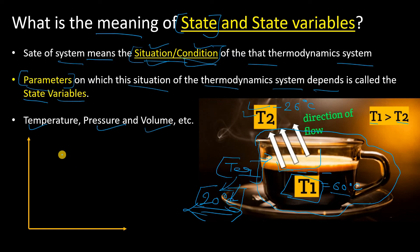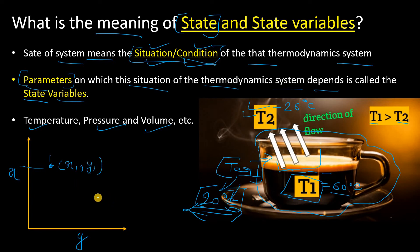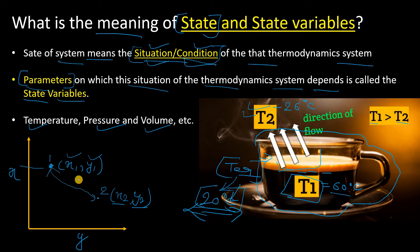Suppose there is my system, and at that time the x-axis and y-axis represent the variables or parameters. At this point or state, it will have x1 and y1. And suppose the system reaches another point — at that time it will have x2 and y2. So the parameters are going to change, and that's why we call these the state variables. This was about the state variables.